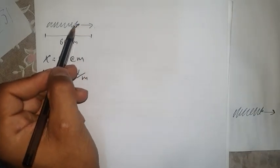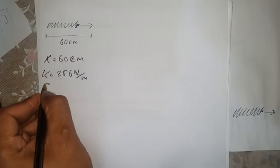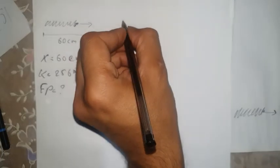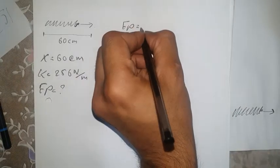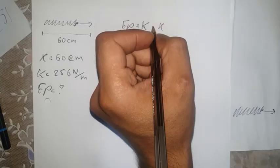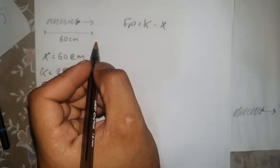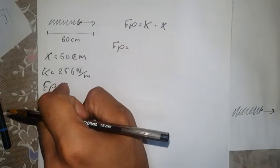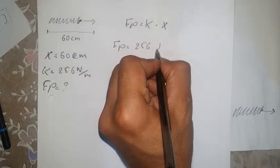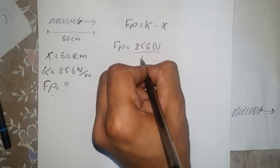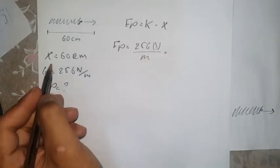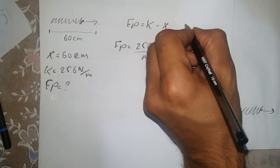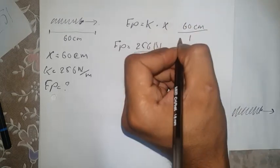We'll name the unknown force Fp. The formula is: Fp equals the spring constant times the displacement x. We have the spring constant as 256 newtons per meter. The distance is in centimeters, so we need to convert it to meters: 60 centimeters.